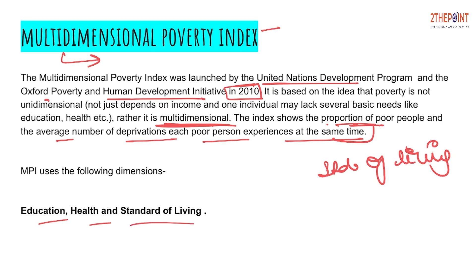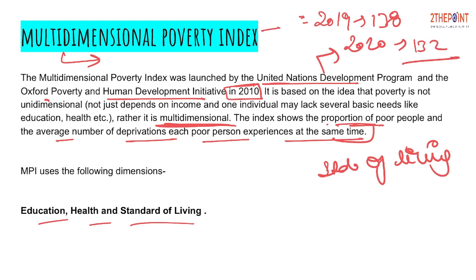Before going to the exam, you need to revise: by whom the index is developed, India's ranking in the current year you are appearing for the exam, and also the previous year's ranking. Sometimes a statement is asked such as 'India has improved in the ranking of the Multidimensional Poverty Index compared to last year,' and you need to verify that. For example, if India's rank was 138 in 2019 and improved to 132 or 133 in 2020, you need to know both figures to eliminate incorrect options.